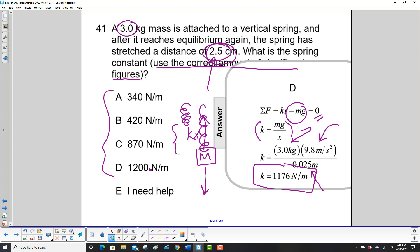But which one of these answers is closer with two significant figures? That would be 1200 newtons per meter.